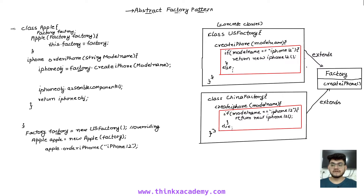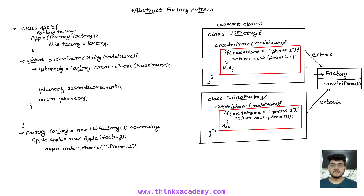In the previous tutorial, we studied a simple example of class Apple and a factory class. There can be multiple factories — an Apple factory in the US, called the US factory, and a China factory. These two are subclasses of the factory class and extend its features. We have an order iPhone function which creates and returns the iPhone object. We can create an object like factory equals new US factory, which actually overrides the create iPhone function from the superclass.